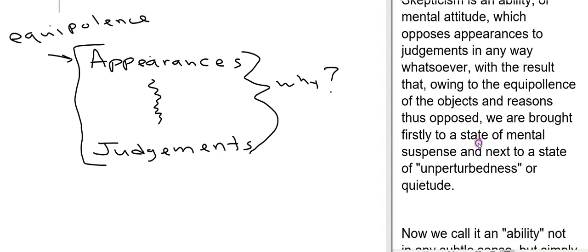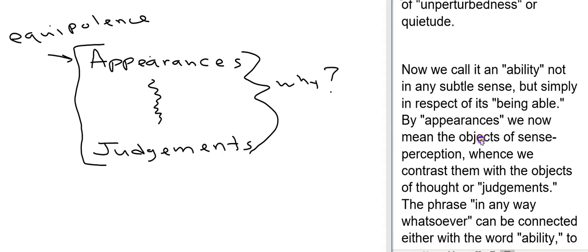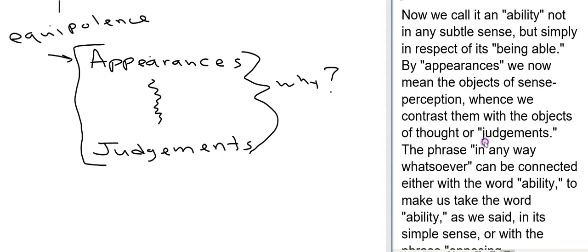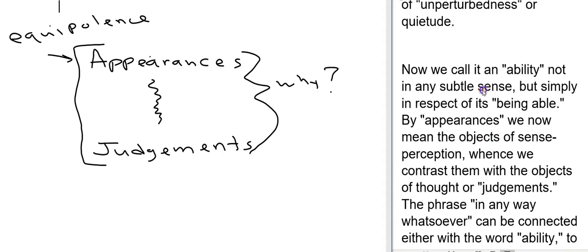But let's start with this idea of equipolence and see what these things mean. He starts out by defining these words. So by appearances we mean the objects of sense perception. He's defining these for us which is helpful.